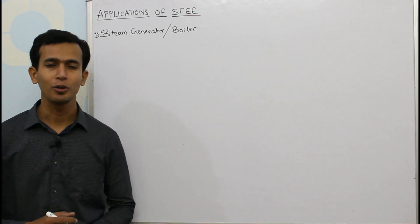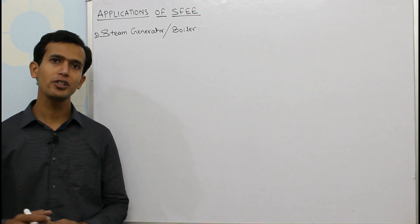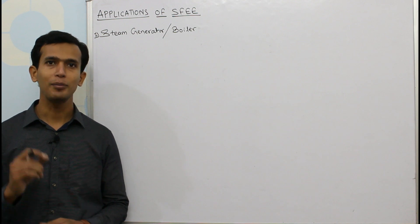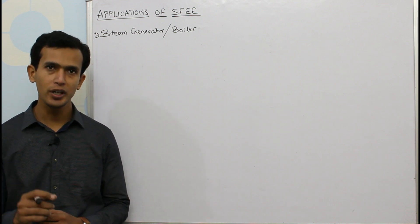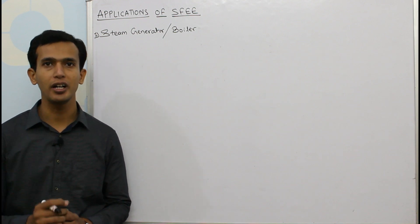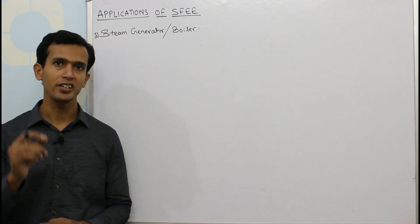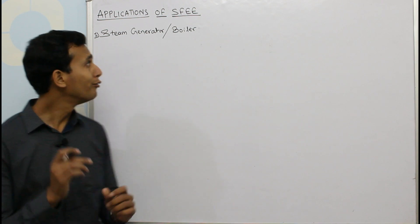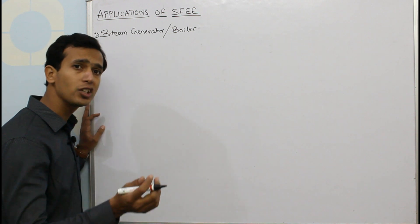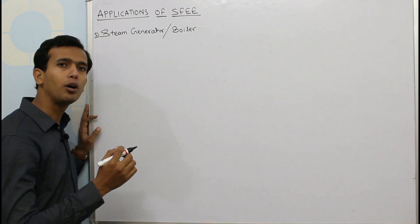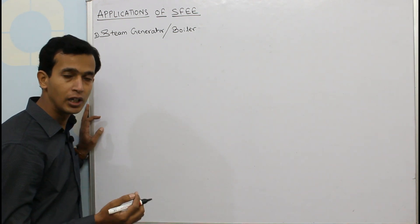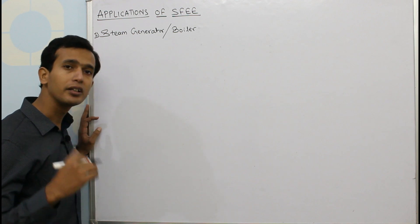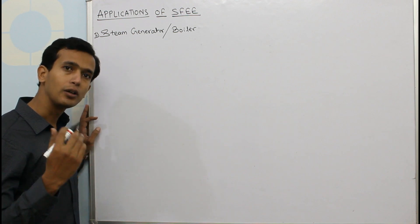Hi, welcome to All About Mechanical Engineering. In today's video we'll understand the application of steady flow energy equation to a steam generator, also called a boiler. Now we all have studied in the previous video the general form of steady flow energy equation. The link is given in the description—you can go there and watch the previous video.